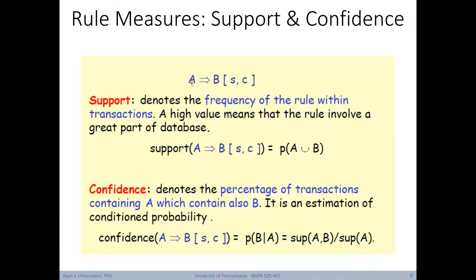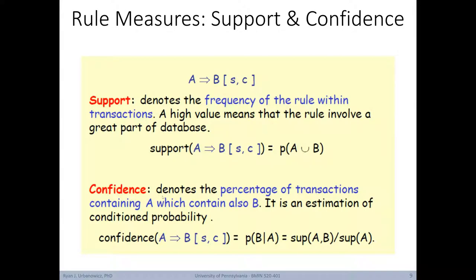Here's an example rule: if A is purchased, then it's likely B will be purchased, with a given support and confidence. Support denotes the frequency of the rule within transactions. A high value means that the rule covers a larger percentage of the transactions in the database. Support is calculated as the count of the number of transactions in which both A and B were included together. Confidence, on the other hand, denotes the percentage of transactions containing A which also contain B — basically an estimation of the conditional probability. So confidence is the probability of B given A, or the support for A and B together divided by the support for just A.